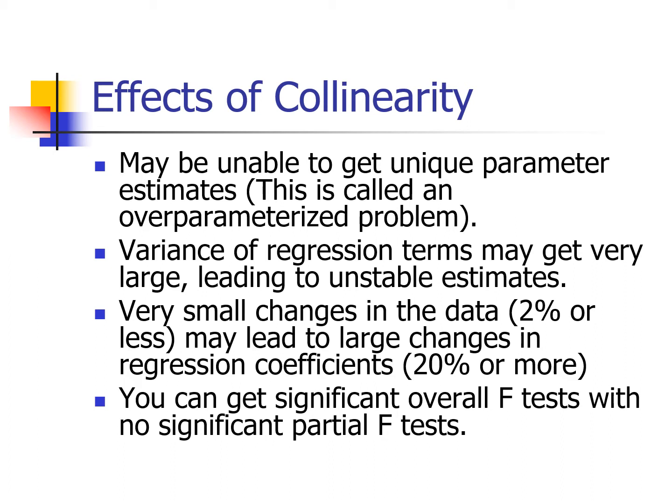The variance of the regression terms can get very large, leading to unstable estimates. By unstable I mean that very small changes in our data — like tweaking numbers by just two percent or less — can lead to very large changes in regression coefficients, perhaps twenty percent or more. We could also get weird situations like a significant overall F-test, but then none of the partial F-tests are significant.